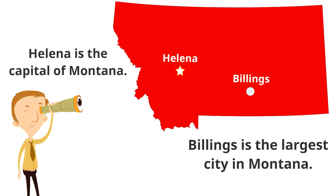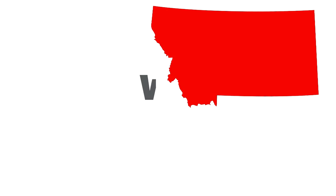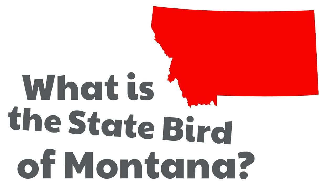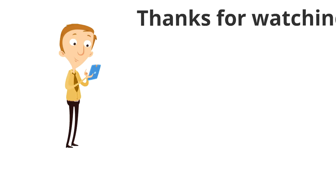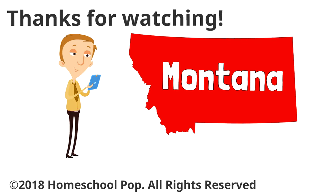Here is our final question: what is the state bird of Montana? The state bird of Montana is the western meadowlark. The western meadowlark is a cute medium-sized bird that almost looks like it's wearing a bib. Western meadowlarks love the wide open spaces of Montana and they love eating insects. Thanks for watching this video on the state of Montana — Big Sky Country, the Treasure State!